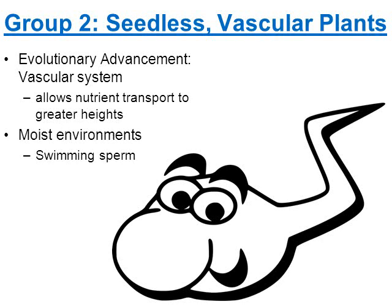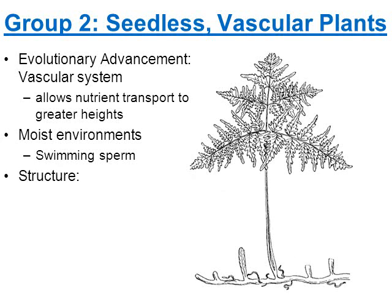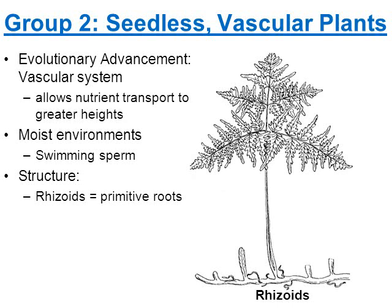The seedless vascular plants reproduce in moist environments. They have sperm cells that have to swim through water, so even though these plants live on land, their swimming sperm cells will swim through rainwater. Ferns have a very primitive root system known as rhizoids, which anchor into the soil and absorb nutrients. The leaves of ferns are what we call a frond, and fronds have little structures on the underside that will eventually release spores into the air.